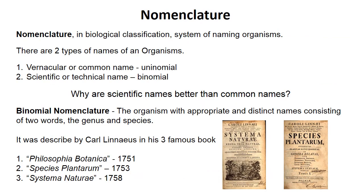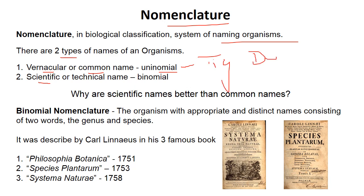Now let's talk about nomenclature. Nomenclature is the naming of organisms — it is the science by which we classify and give names to organisms. In general, nomenclature is of two types: vernacular or common name, and scientific name. The common name is uninomial, meaning a single name, like tiger, deer, or elephant.